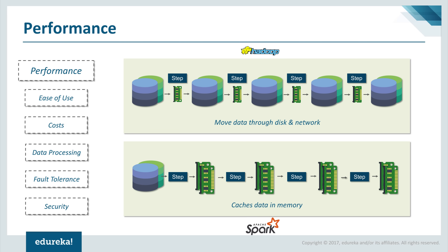Hadoop was originally designed to continuously gather data from multiple sources without worrying about the type of data, storing it across a distributed environment. MapReduce uses batch processing and was never built for real-time processing. The main idea behind Yarn is parallel processing over distributed datasets. The problem with comparing the two is that they have different ways of processing and the ideas behind their development are also divergent.